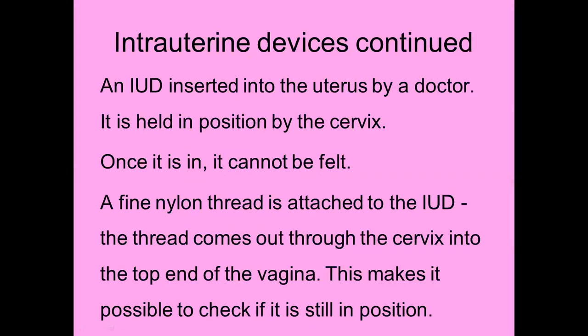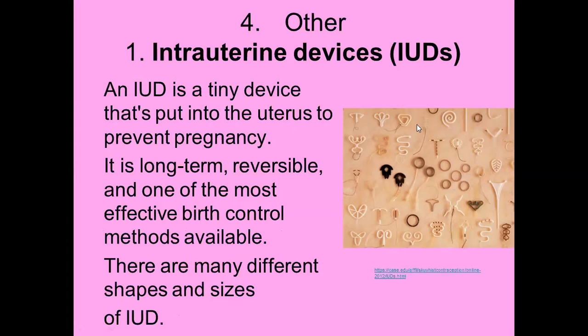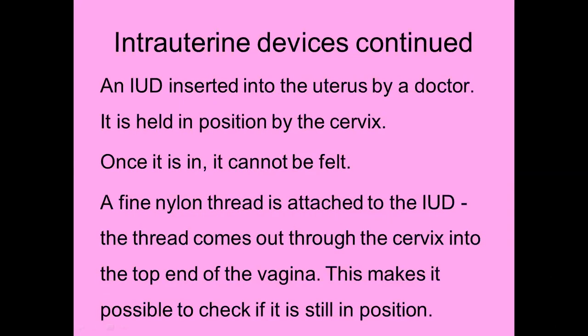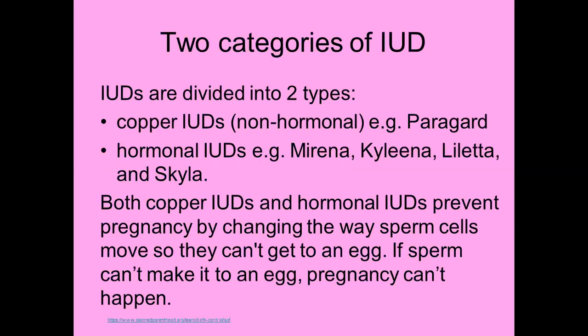An IUD is inserted into the uterus by a doctor using an applicator. It's held in position by the cervix, and once in, it can't be felt. However, there's a fine nylon thread attached to the IUD that lies out through the cervix into the top end of the vagina, so it's possible to check if the IUD is still in position — it is possible for the IUD to fall out, though unlikely. By checking that those little threads are there, you can confirm the IUD is still in place.